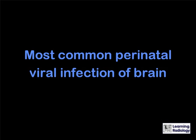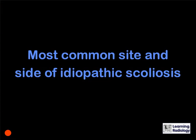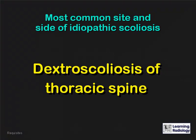What is the most common perinatal viral infection of the brain? Cytomegalovirus. And lastly, what is the most common site and side of an idiopathic scoliosis? A dextroscoliosis of the thoracic spine.